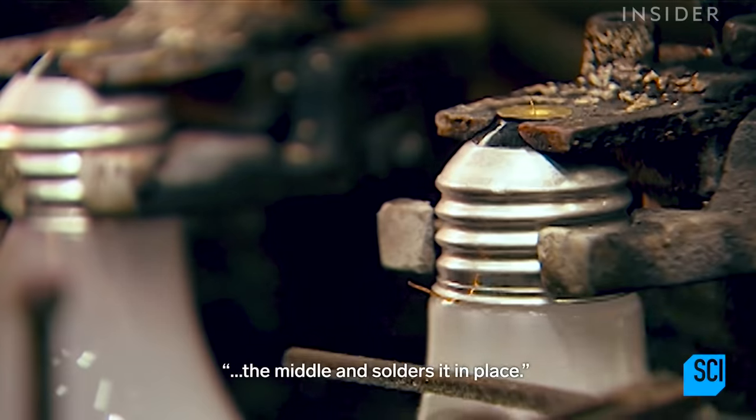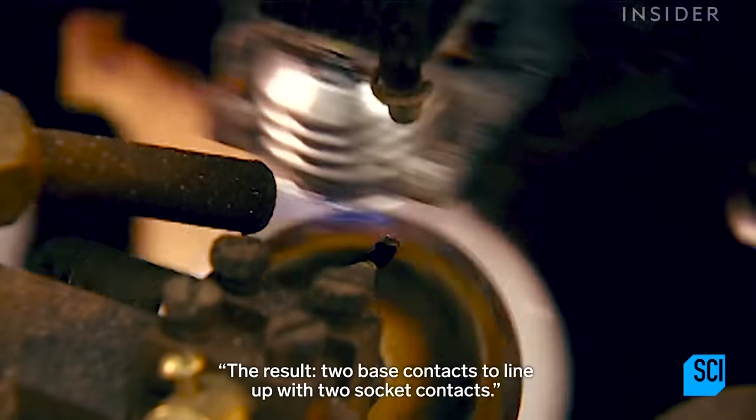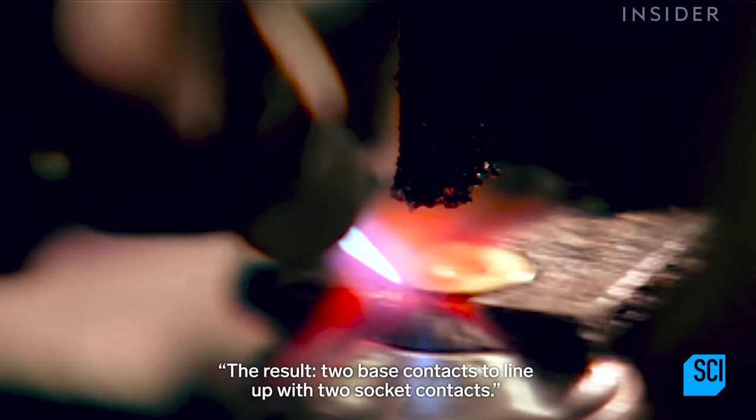This machine inserts one of the bulb's lead wires through the middle and solders it in place. It then spot welds the other wire to the side. The result: two base contacts to line up with two socket contacts.